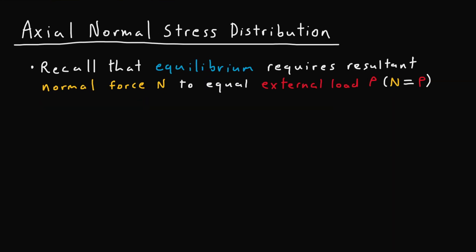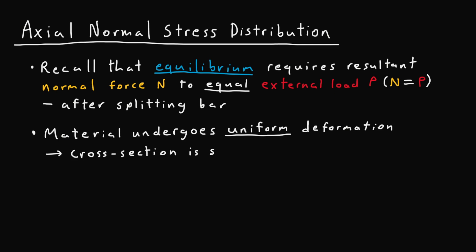And of course this is after the bar is split in two. So again n equals p due to static equilibrium. And now for an axial normal stress distribution we must consider that the material undergoes uniform deformation and so as a result of uniform deformation the cross section is essentially subjected to constant normal stress distribution.